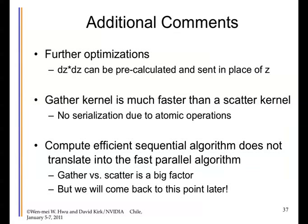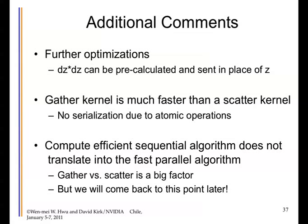Further optimizations: deltaZ squared should be pre-calculated and passed in place of Z, since in the sequential code deltaZ is calculated once, but in this kernel every thread would calculate it. That requires minor code refactoring before launching the kernel. The gather kernel is much faster than the scatter kernel because there's no serialization. The computationally efficient sequential algorithm does not translate into the fast parallel algorithm — scatter versus gather is a major factor.